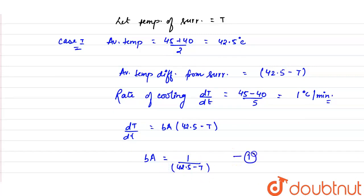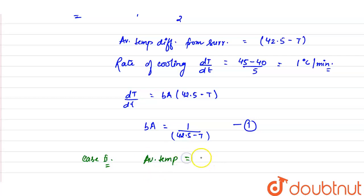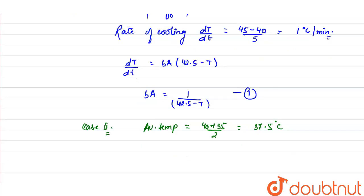In Case 2, when the temperature falls from 40°C to 35°C in 8 minutes, the average temperature is (40 + 35) / 2 = 37.5 degrees Celsius.